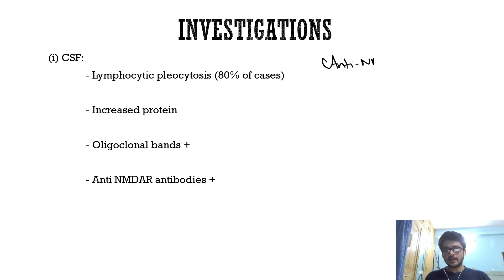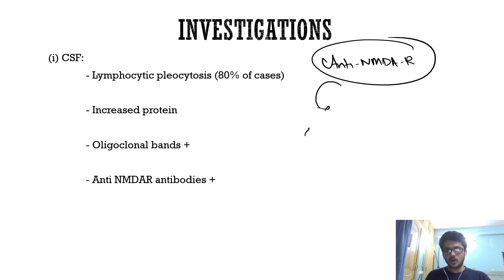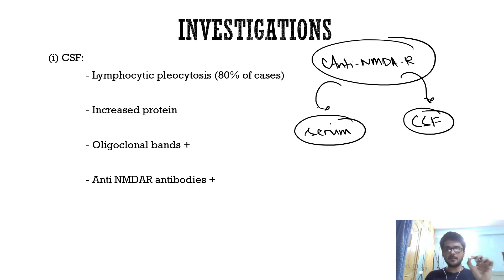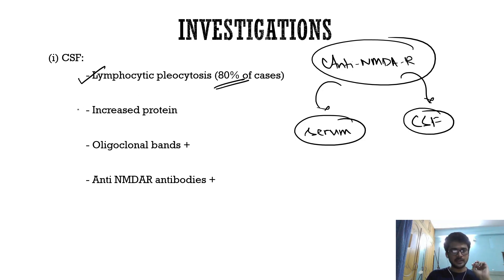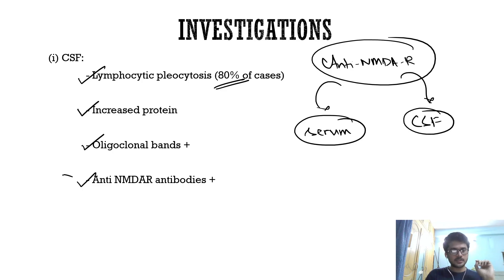For investigations, look for anti-NMDA receptor antibodies in both the serum and CSF — not only in the serum. In the CSF, expect lymphocytic pleocytosis in 80% of cases, increased protein, and oligoclonal bands, which indicate intrathecal synthesis of immunoglobulins. Anti-NMDA receptor antibodies are demonstrated in both serum and CSF.